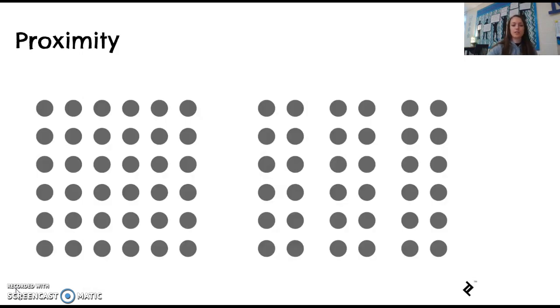Here we've got proximity. Proximity tells us that whenever we see a group of objects, if they're close together, we interpret it as one group rather than a bunch of small groups. On the left, you probably saw one group of circles rather than a bunch of little circles. On the right, you probably saw three groups because they're close in proximity, and so you saw three groups rather than a bunch of little dots.